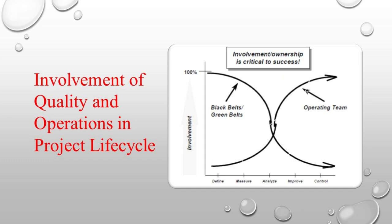Another important aspect of the control phase is the involvement of quality and operations teams throughout the project life cycle. In the define phase, the quality team should be more involved while operations provides data. As we move toward the analyze phase it becomes 50-50. As we move toward the control phase, the quality team's role should fade out, and the operations team should take charge. A proper handover plan should be made and the project handed back to operations.